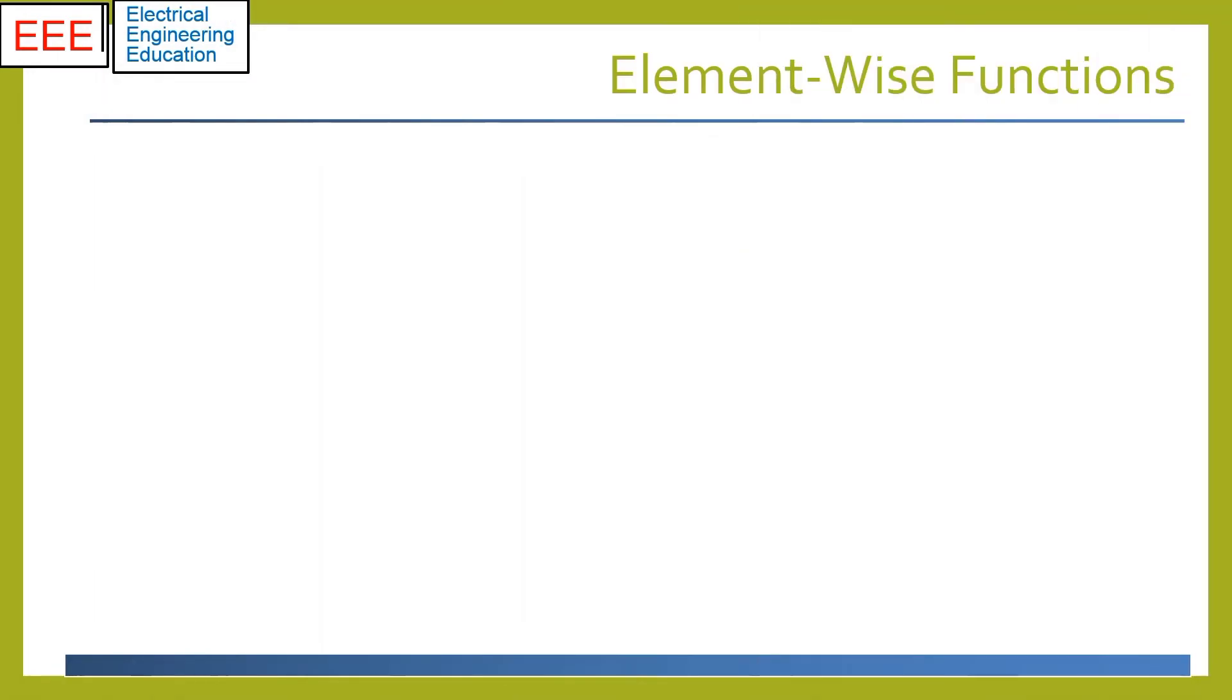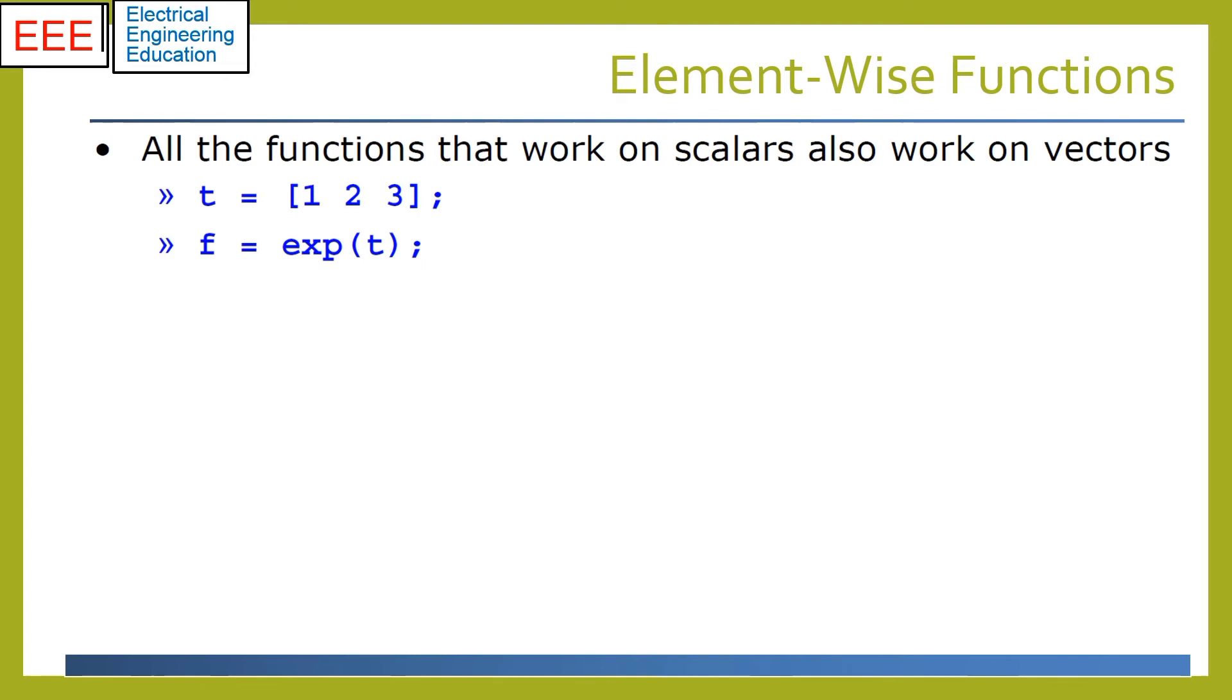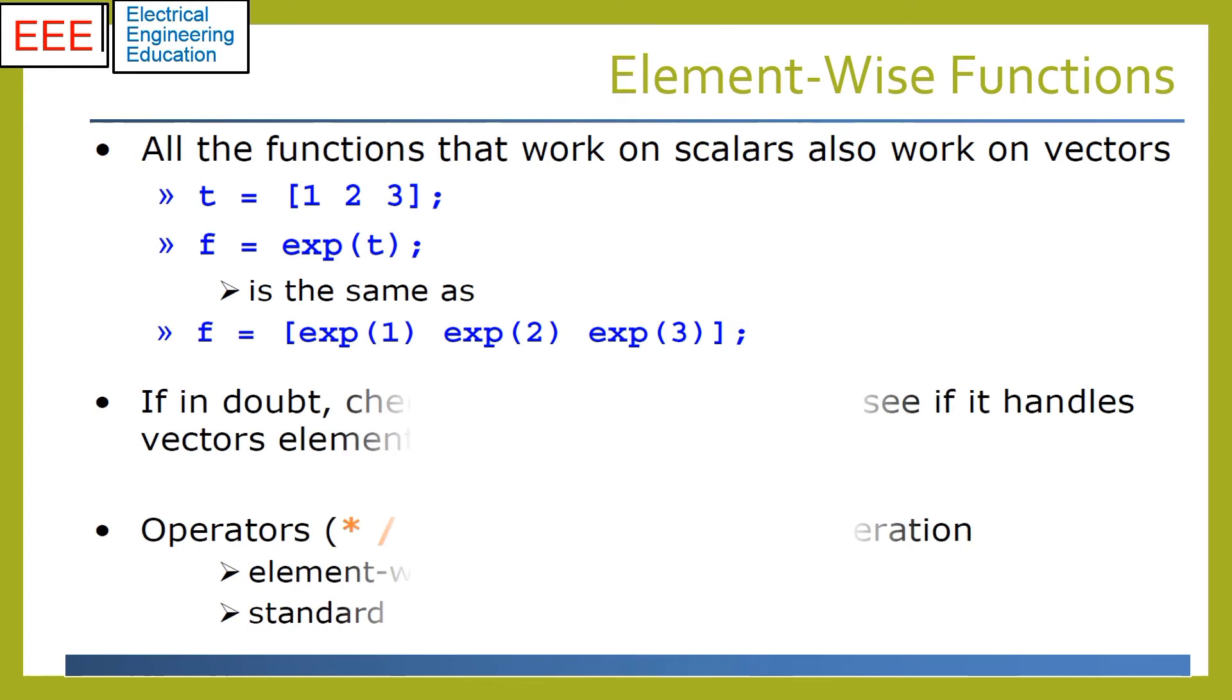An element-wise function allows you to apply a function to the elements of a data container. The data container can be a list, set, table, array, matrix, or vector. If we have a vector t with three elements, the exponential function will return the corresponding three exponential values in the order listed.